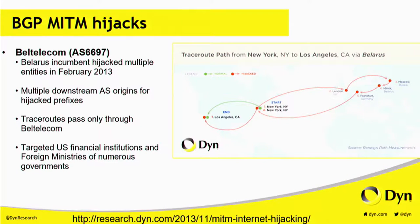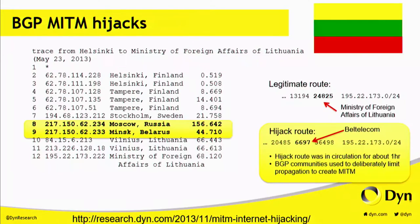Here's another example from a couple years back — this was the one from Belarus. We saw someone announcing address space out of some U.S. financial institutions and some government entities around the world. We were able to track the traffic back through Belarus. This is an example of one of the hijacks of the Ministry of Foreign Affairs of Lithuania. On the right-hand side, just below the legitimate route, there is an AS path. In bold is AS24825 — the autonomous system of the Ministry of Foreign Affairs of Lithuania. That's the legitimate origin of this route. The hijack came out of Belarus. We ran traces automatically around the internet, and we had one that came from Helsinki to Lithuania that was redirected through Moscow and Minsk. Those hops are not normally in the path — that's one way to verify that some traffic has been affected.